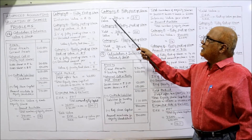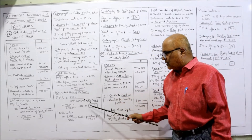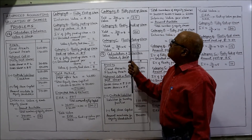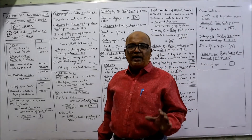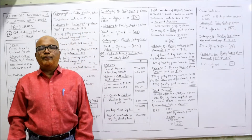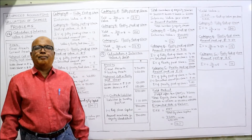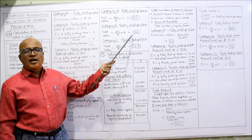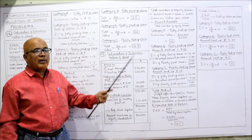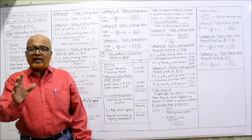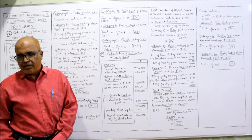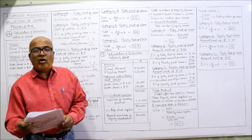Category A — fully paid up share: yield value = 20/8 into 10 = 25 rupees. Category B — partly paid up share with 8 rupees paid up: 20/8 into 8 = 20 rupees. Category C — partly paid up share with 5 rupees paid up: 20/8 into 5 = 12.5 rupees. So we have calculated intrinsic value and yield value for all three categories of shares. Now moving on to Problem 13.